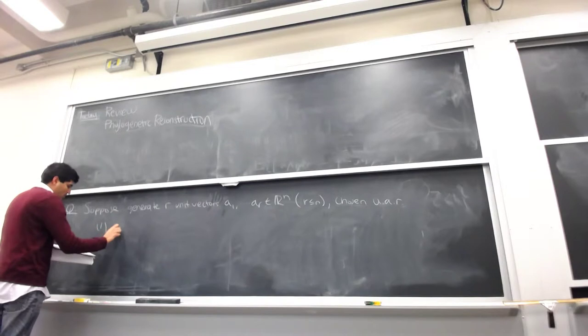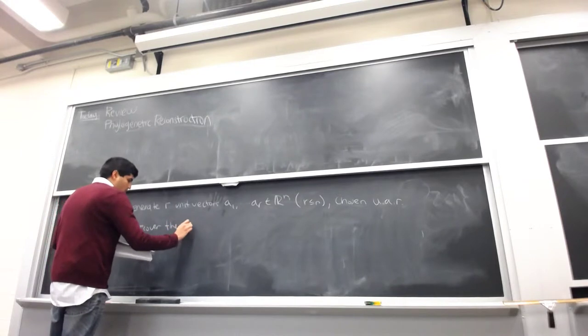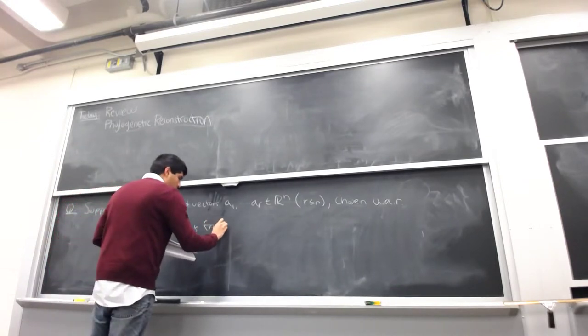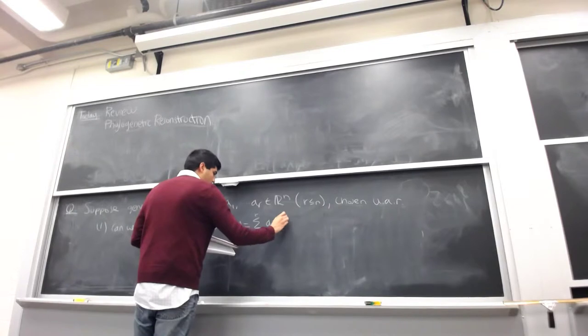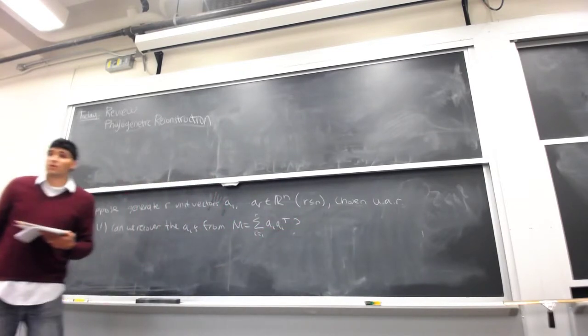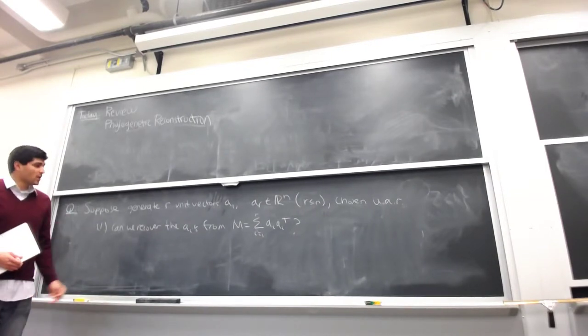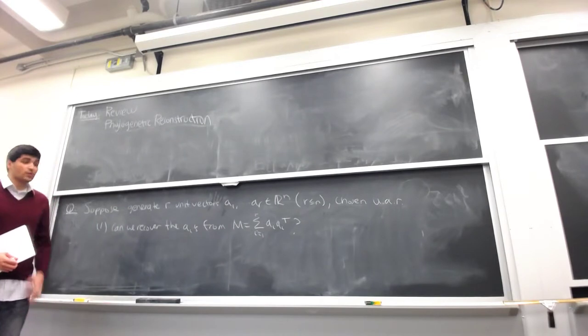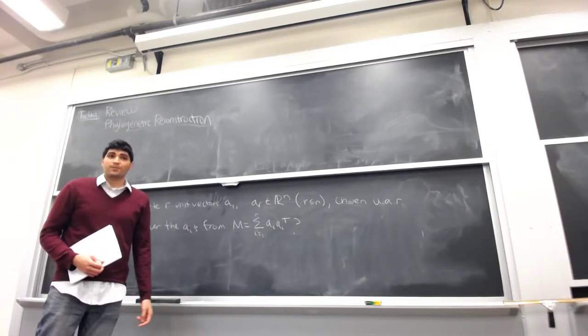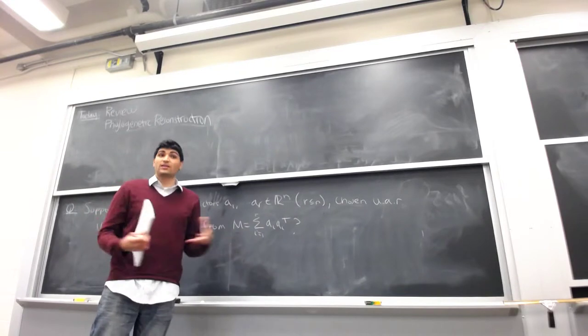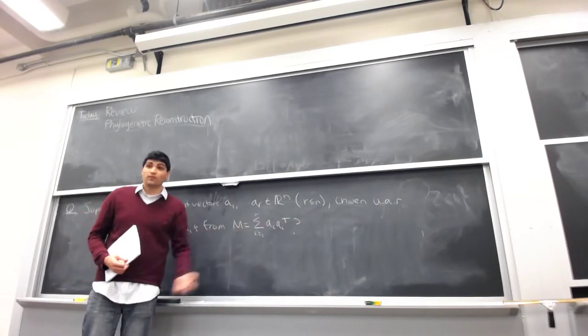So two questions. The first is: can we recover the A_i's from given M, where M is the sum of these outer products? A simple question. Someone generates these R unit vectors uniformly at random on the sphere, and all they tell us about them is the sum of their outer products. We can think about these as factors that are adding together. Given just M, even perfect access to M, can you recover the A_i's?